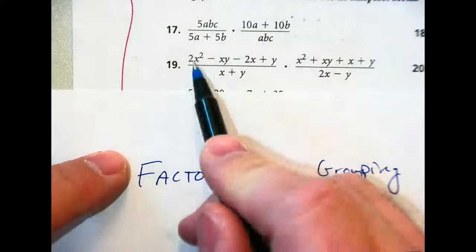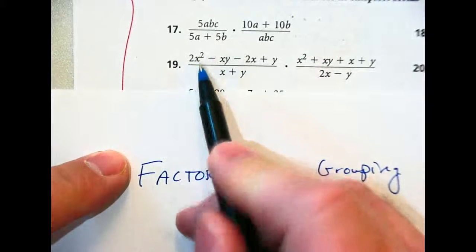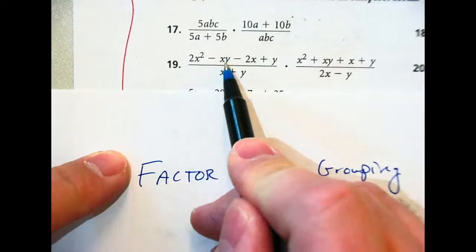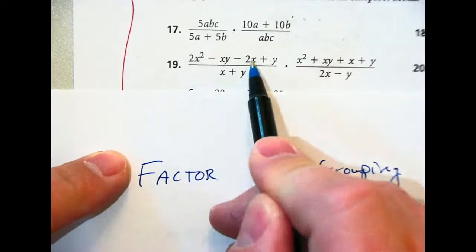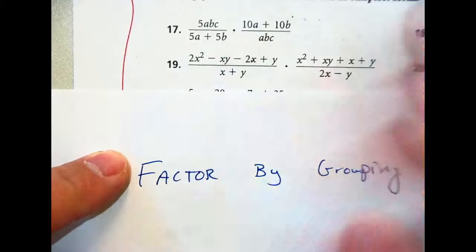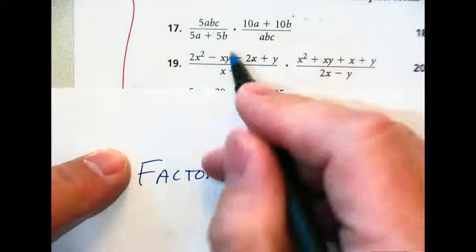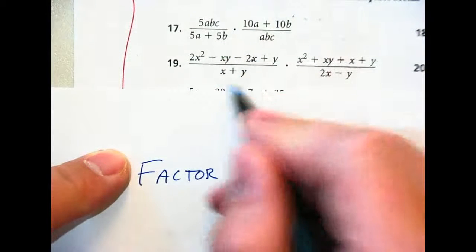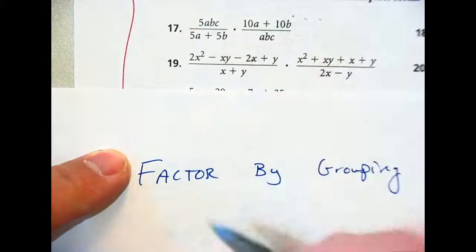So you could try to group any two pieces together. You could put the 2x squared and the xy together, the 2x squared and the 2x together, the 2x squared and the y together, whatever you want. But the point is you have to be able to move things around and you want to be able to pull something out of that.